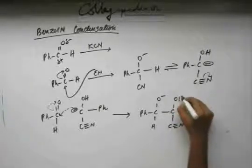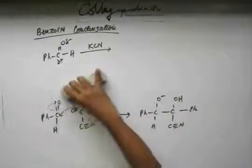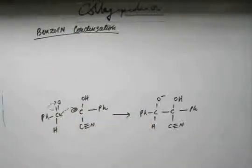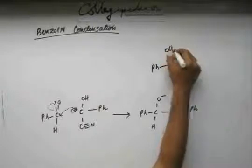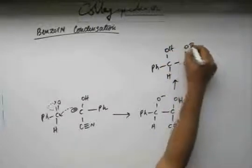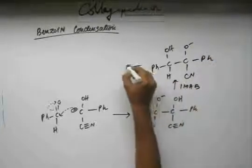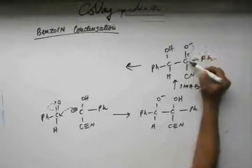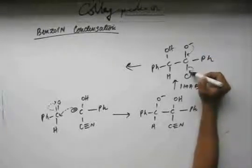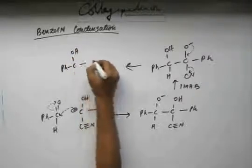For that to happen, the negative charge first has to appear on this oxygen. So an intramolecular acid-base reaction will occur — a proton will be transferred from this oxygen to that oxygen. Then oxygen will push its electrons into the orbital of carbon, carbon will lose its electrons into the orbital of cyanide, CN⁻ will come out, and C=O will be generated.